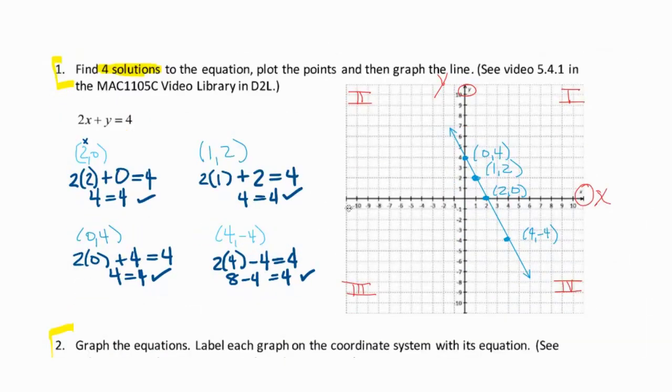Now, how many points does it take to determine a line? That's right, you need a minimum of two points. If you can get more, then that kind of reassures you that you were on the right track.